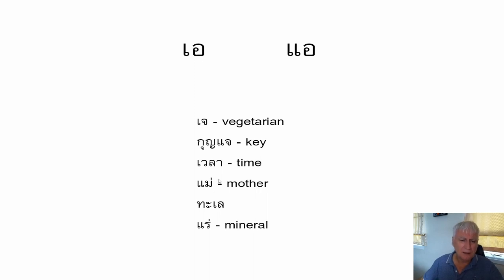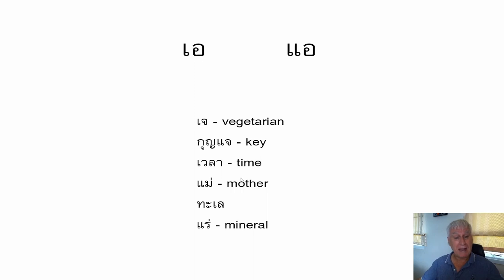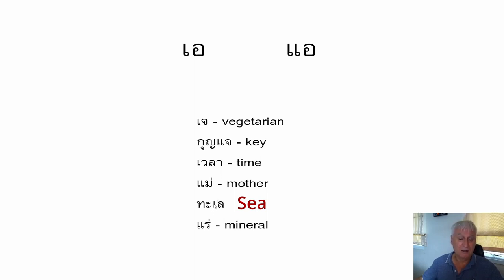This word has no final consonant — just the Sara A vowel and the Mo Ma M initial consonant. It has a falling tone, so you put energy into the front and it drops off: 'may,' which means mother. The next word — 'ta-lay' — is a T consonant then the short up vowel giving 'tap' as the first syllable, then Sara Air and Lo Ling, giving 'lay.' So 'ta-lay,' which means sea or ocean in Thai.